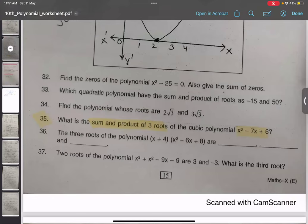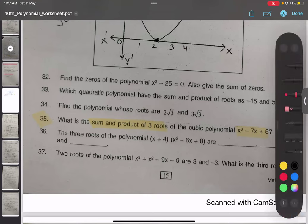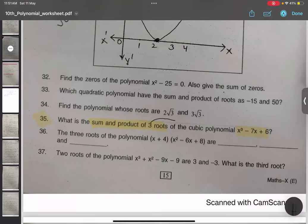Question is asking sum and product. So, how will we do this question now? Alpha beta plus beta gamma. Very good. So, sum and product is alpha beta, beta gamma, and gamma alpha.